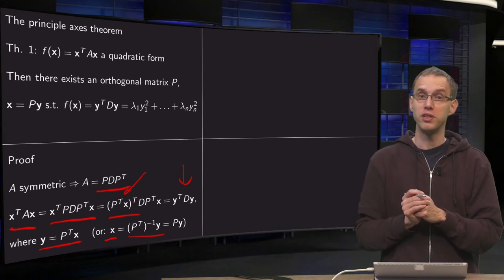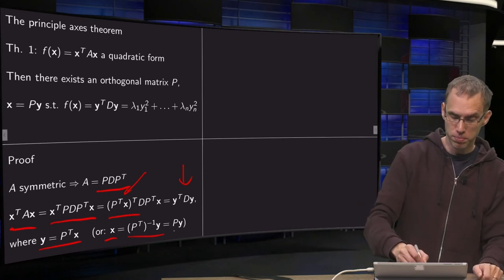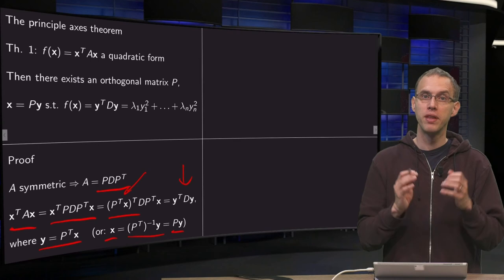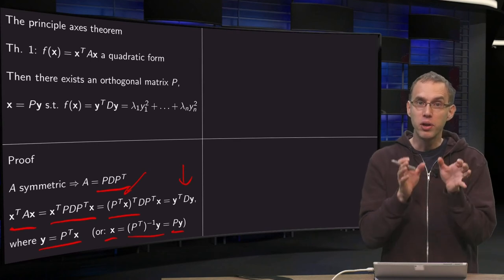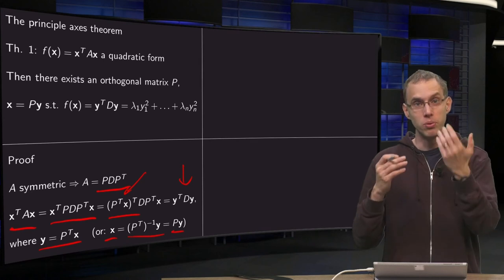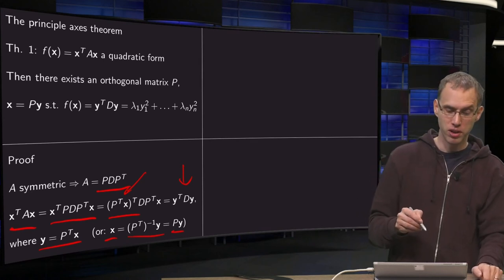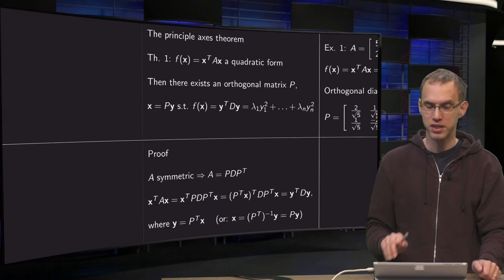But P transpose equals P inverse, so this yields P times y. So now you see you can always transform your x transpose times A times x into y transpose times D times y if you use the orthogonal diagonalization of the matrix A.